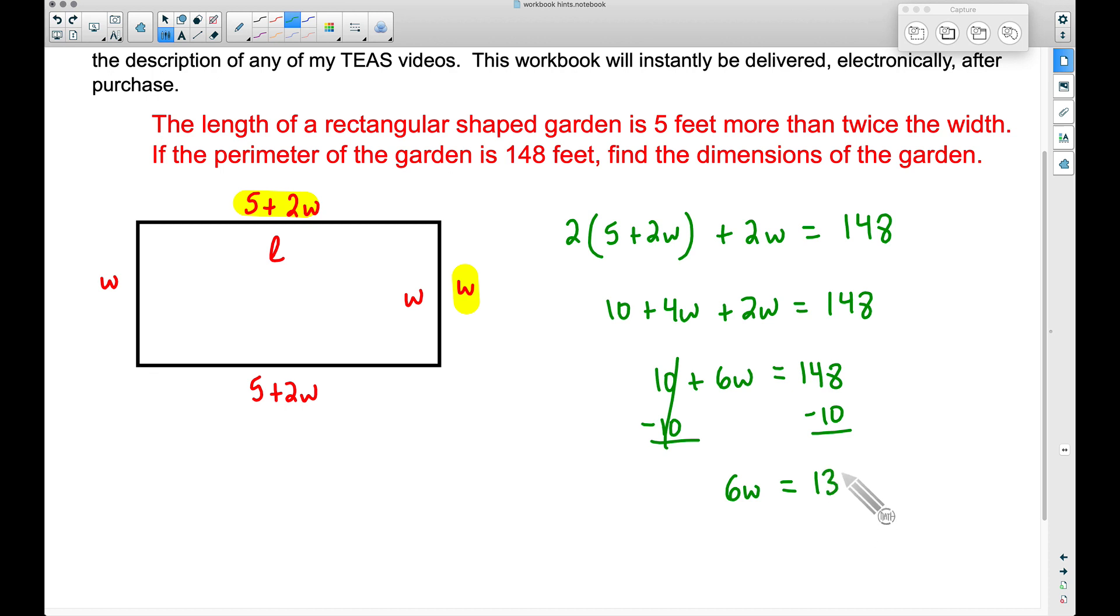That's going to cancel out the tens over here. A positive 6W equals 138. So 6 times our width equals 138. I'm going to divide—that's the inverse operation of multiplication. We take 138 and divide it by 6, and you should get 23. This is the width of the garden.